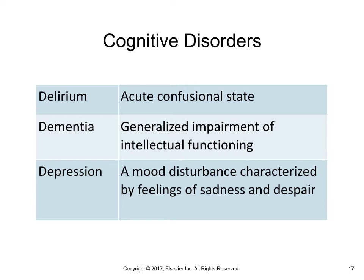Delirium is a potentially reversible cognitive impairment that often has a physiological cause, which can include electrolyte imbalances, untreated pain, infection, cerebral anoxia, hypoglycemia, medication effects, tumors, subdural hematomas, and cerebrovascular infarction or hemorrhage. It may accompany systemic infections, pneumonia, or urinary tract infections. It may also be caused by sensory deprivation or overstimulation, unfamiliar surroundings, sleep deprivation, or psychosocial factors such as emotional distress. It is possible for delirium and dementia to occur at the same time.